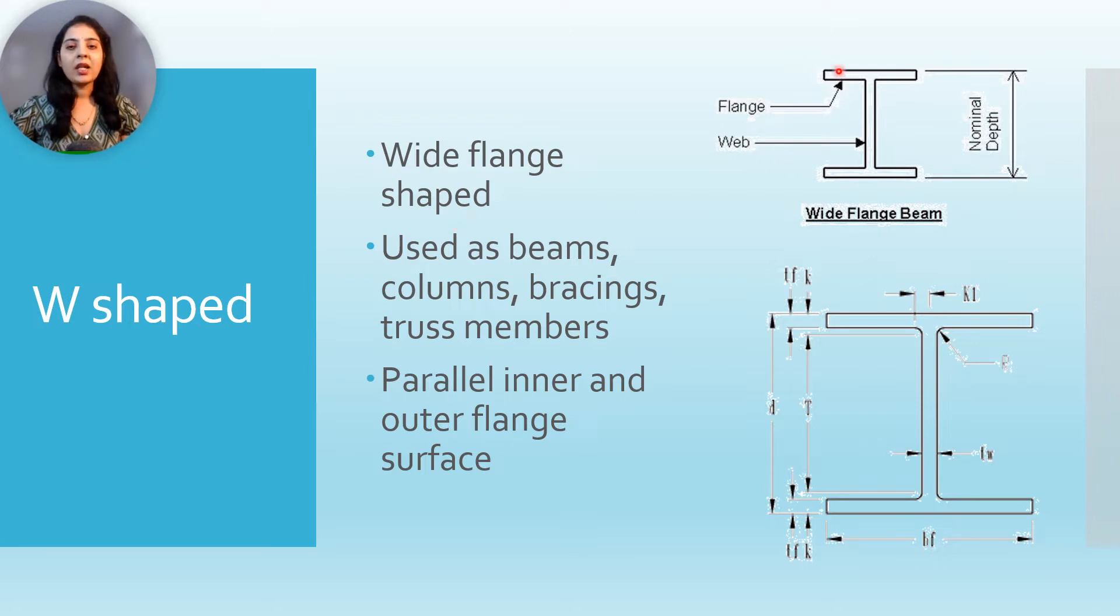They are in the shape of English letter I. This is the flange and this is the web, and nominal depth is from topmost layer to bottommost layer. They are used as beams, columns, bracings, truss members, and they have inner and outer flange parallel.